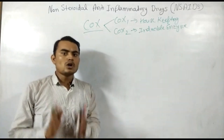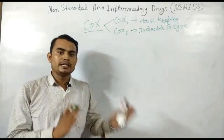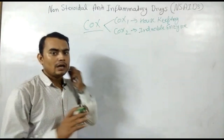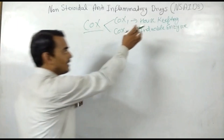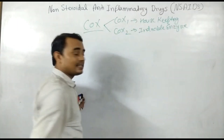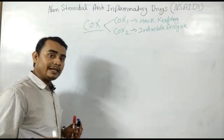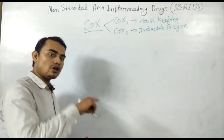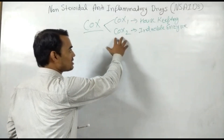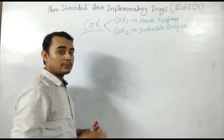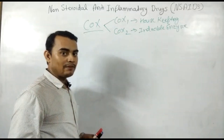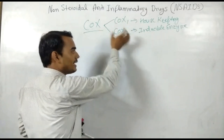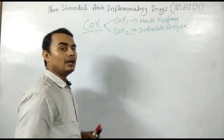COX-1 enzyme is constitutively present in our body and is secreted from the kidney, plasma, liver, and all parts — that serves as the housekeeping part. While COX-2 enzyme is the inducible enzyme, and COX-2 enzyme only releases after inflammation. That means if any inflammation occurs, then COX-2 enzyme releases, and this COX-2 is mainly responsible for antipyretic, analgesic, and anti-inflammatory action.